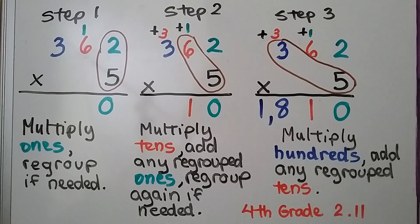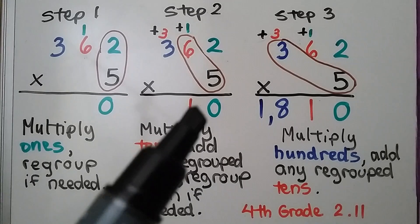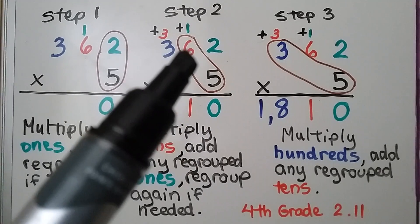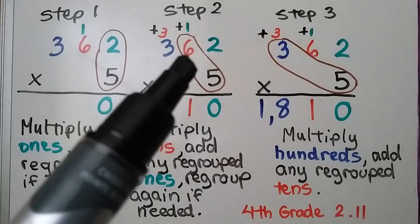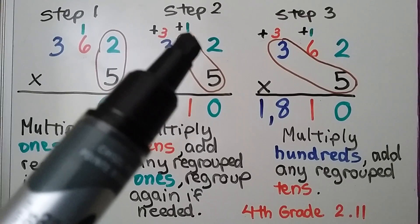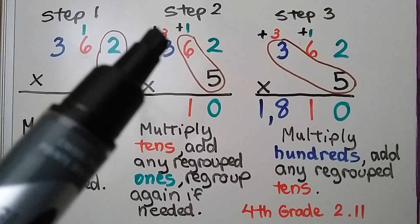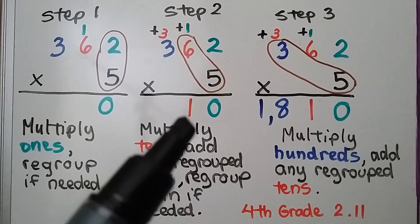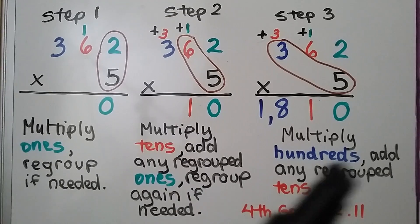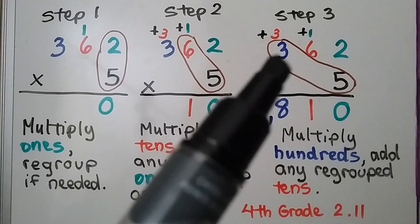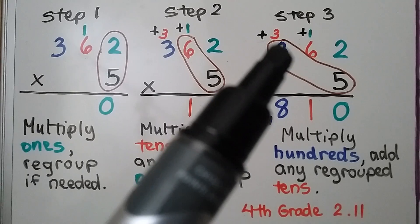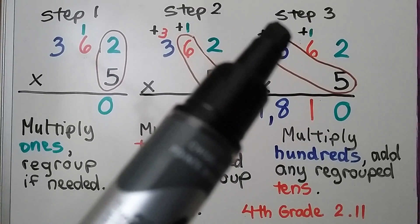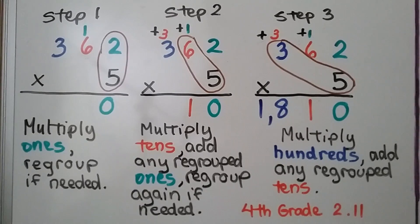Next step, we multiply the tens, add any regrouped ones, and regroup again if needed. So we're multiplying five times six for the tens. Five times six is thirty, plus that one is thirty-one, so we're going to regroup the three and write the one down here. Now we're going to multiply five times the hundreds place. Five times three is fifteen, plus three more is eighteen. We have one thousand eight hundred ten.